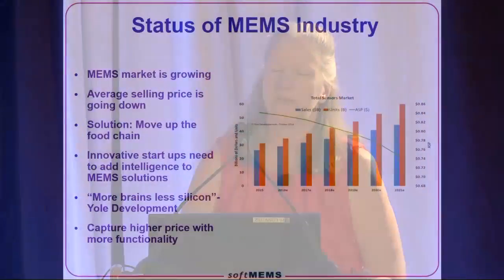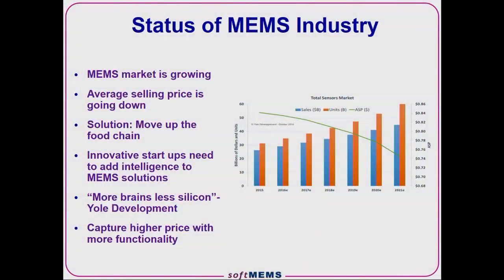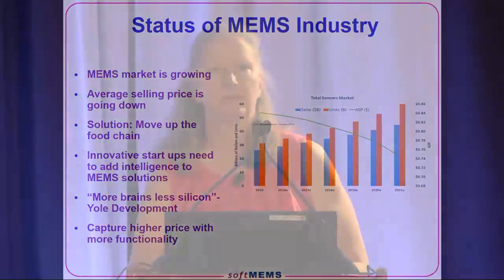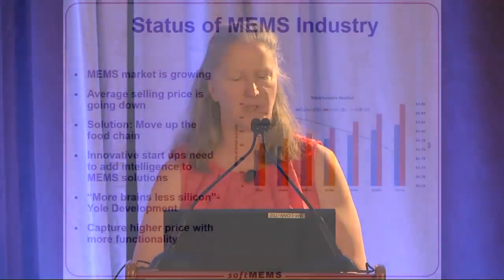A little bit about the status of the MEMS industry itself: our market is growing with new applications all the time and more people joining in. But the problem is our average selling price is going down. The average selling price of individual chips is getting lower and lower, and there's a lot of competition. Apple is really squeezing manufacturers to get the price per chip lower.